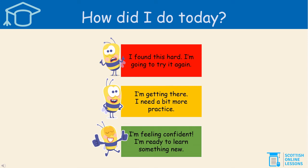It's time to self-assess using the traffic lights. Ask yourself: how did I do today? Use these to help gauge your understanding of multiplying four-digit by two-digit numbers — and more specifically, the grid method. Did you find this hard? If so, you were in the red zone — it might be useful to try the lesson again. If you're in the amber zone, you're getting there and just need a bit more practice — you could try the suggested follow-up activities. Or are you in the green zone? You're feeling confident, you enjoyed this lesson, and you're ready to learn something new — you could try another lesson.